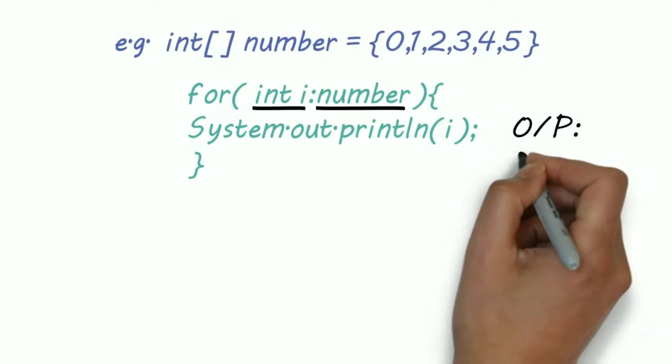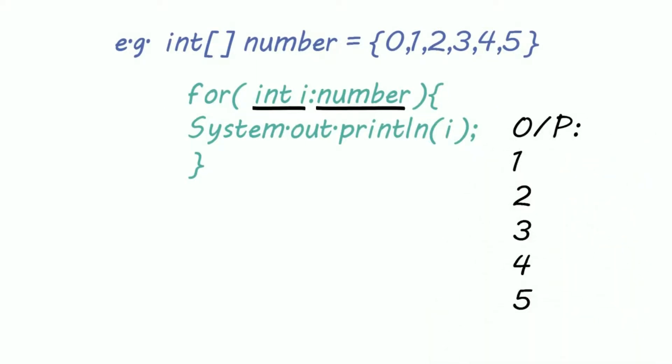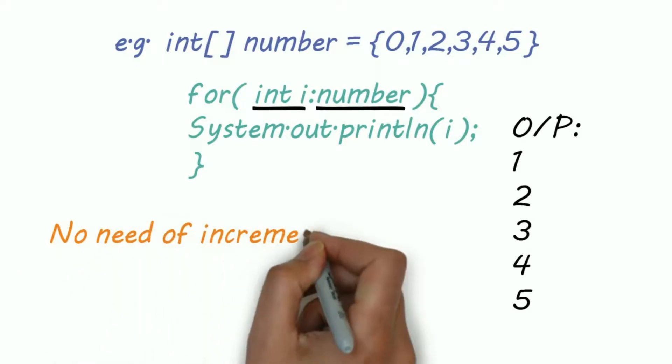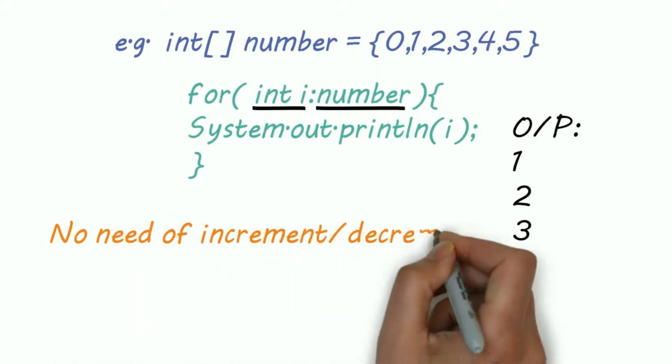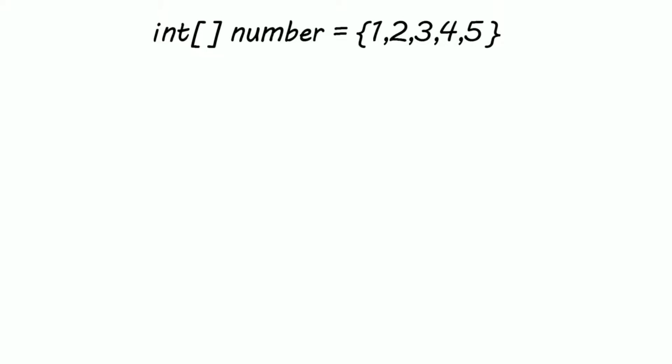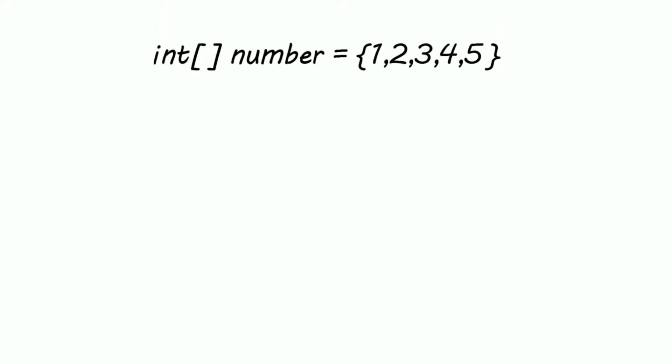For each iterates over a container. We don't need to write the increment or decrement in for each. While programming, for each loops are preferred over regular for loops. I just want to show you why you should prefer for each over for.